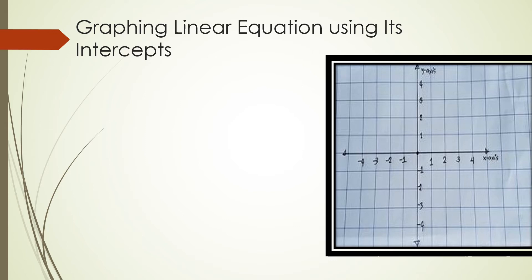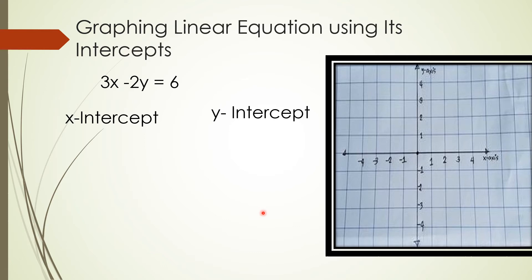Now let's graph a linear equation using its intercepts — the x-intercept and the y-intercept. The x-intercept is the point where the graph crosses the x-axis, and the y-intercept is where it crosses the y-axis. The given equation is 3x minus 2y equals 6, and we're going to solve for both intercepts.